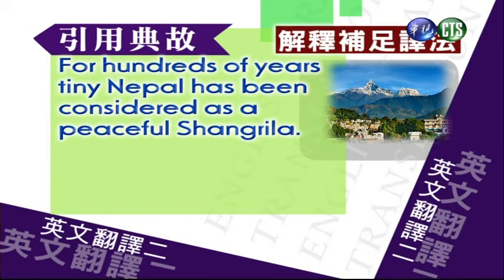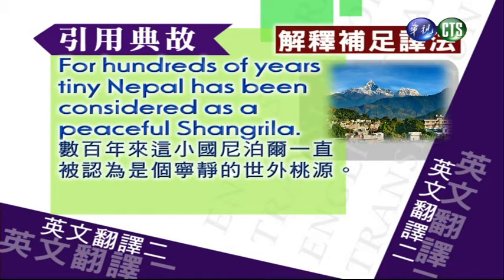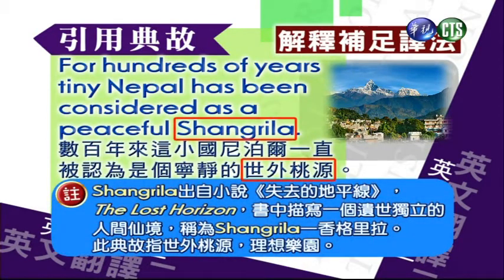For hundreds of years, Tiny Nepal has been considered as a peaceful Shangri-la. 数百年来，小国尼泊尔一直被认为是个宁静的世外桃园。我们来做注释：Shangri-la出自小说失去的地平线The Lost Horizon。书中描写一个仪式独立的人间仙境，称为Shangri-la香格里拉。这个典故就指世外桃园、理想的乐园。好，同学，我们先介绍到这里，休息一下。